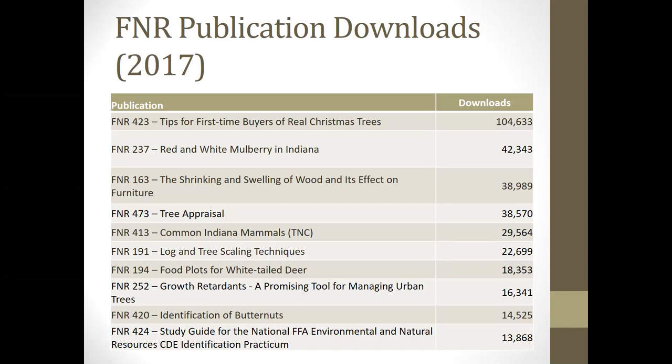We track publication downloads every year as well as sales. As an example from 2017, the Christmas tree publication has over 100,000 downloads every year. It covers areas like food plots and log tree scaling techniques. If it's a new publication, it won't have a lot of downloads in its first year — sometimes it takes a while for things to get out there and announced. Our department does a really good job of that through social media and our blog.